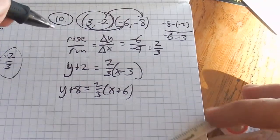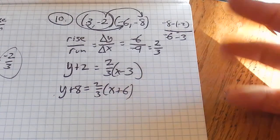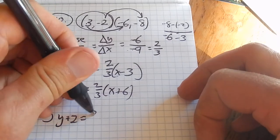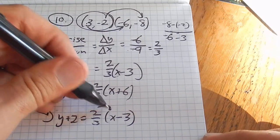If I wanted it in slope-intercept form, I could pick either one of these and solve for y. So here, distribute the 2 thirds.